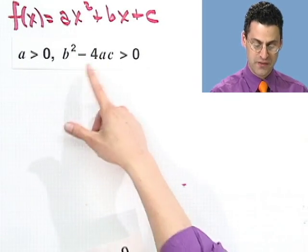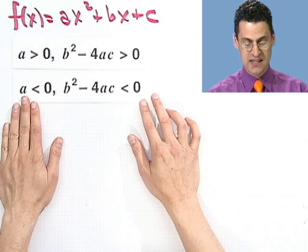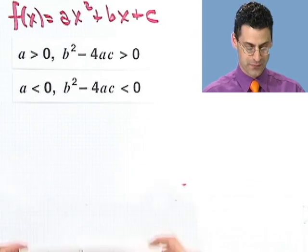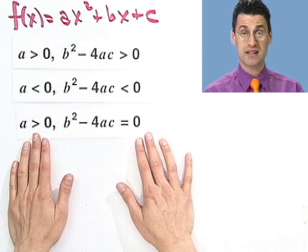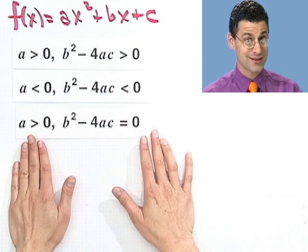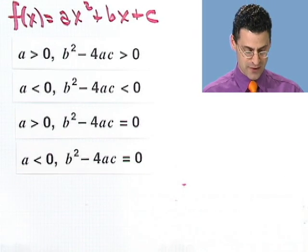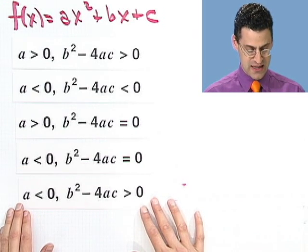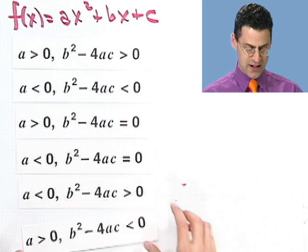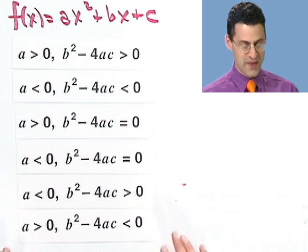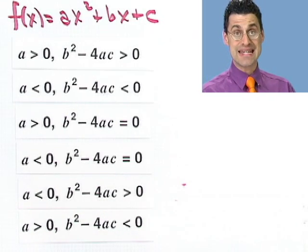We have a is positive and the discriminant is positive. We have a is negative and the discriminant is negative. We have a is positive and the discriminant is 0. Quite unusual. We have that a is negative and the discriminant is 0. And we have that a is negative, but the discriminant is positive. And finally, ladies and gentlemen, for your viewing pleasure, we have that a is positive and the discriminant is negative.